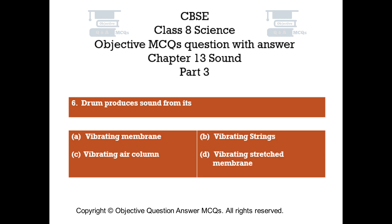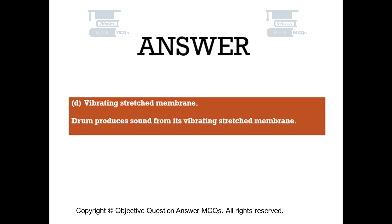Question number 6. Drum produces sound from its: Option A – vibrating membrane. Option B – vibrating strings. Option C – vibrating air column. Option D – vibrating stretched membrane. The right answer is option D. Drum produces sound from its vibrating stretched membrane.